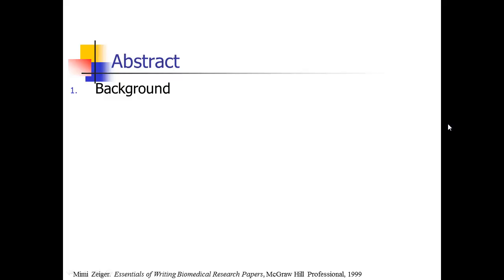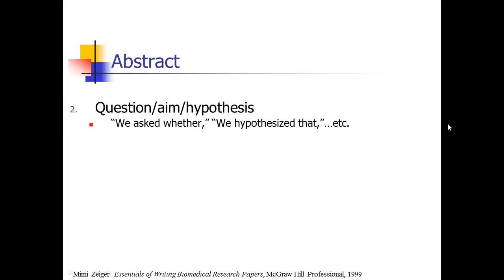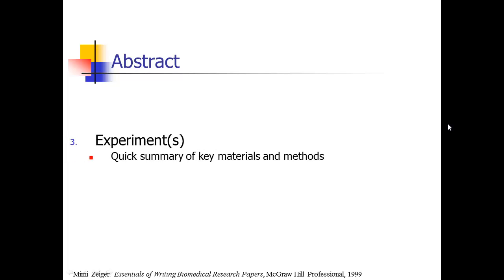Mimi Zeiger's book has a nice summary of what should go in the abstract — essentially just pulling out little bits from all parts of your paper. It's good to have a one-sentence statement of background to give context, because if somebody is jumping into your abstract, you need to ground them in the research question. Then you explicitly state that research question, just like at the end of the introduction — using phrases like 'we asked whether,' 'we hypothesized that,' or 'we speculated that.' The background and question statement come essentially right out of the introduction.